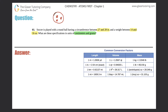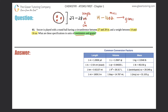They're saying that the soccer ball has a circumference — basically the perimeter of the ball, the outside space — between 27 and 28 inches, and a weight anywhere between 14 and 16 ounces. We just have to convert that into centimeters and grams. Inches is a type of length, so it converts to centimeters. Ounces is a unit of mass, and so is grams.